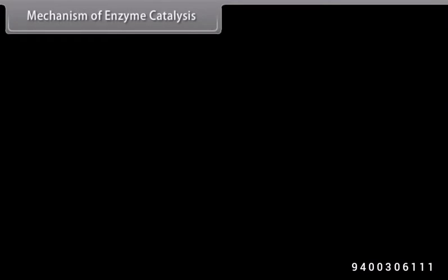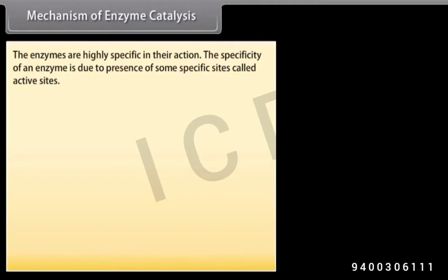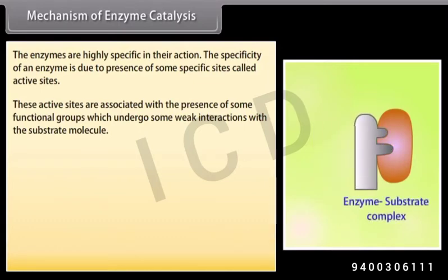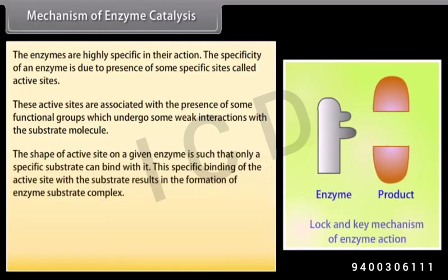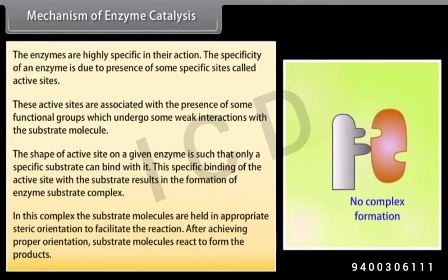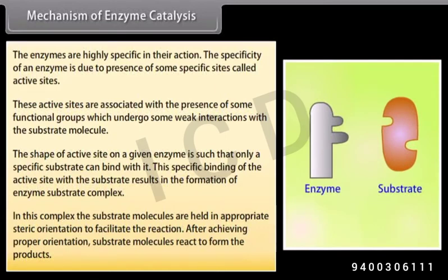The enzymes are highly specific in their action. The specificity of an enzyme is due to the presence of some specific sites called active sites. These active sites are associated with functional groups which undergo weak interactions with the substrate molecule. The shape of the active site is such that only a specific substrate can bind with it, resulting in the formation of an enzyme-substrate complex. In this complex, substrate molecules are held in appropriate steric orientation to facilitate the reaction. After achieving proper orientation, substrate molecules react to form the products. As product molecules do not have affinity for the enzyme surface, they immediately leave the surface so that fresh substrate molecules can bind with the active site.